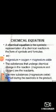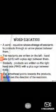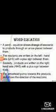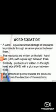The new substance — magnesium oxide — formed during this reaction is a product. A word equation shows the change of reactants to products through an arrow placed between them. The reactants are written on the left-hand side (LHS) with a plus sign between them. Similarly, products are written on the right-hand side (RHS) with a plus sign between them. The arrowhead points towards the product and shows the direction of the reaction. So: Mg + O2 → MgO. Magnesium and O2 are on the LHS, and MgO is the product on the RHS.